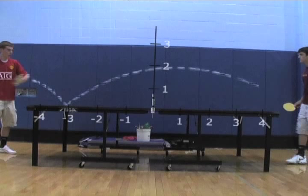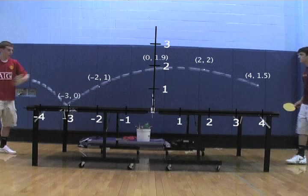Next thing, we'll bring up the graph and plot the points. The points are 4, 1.5, 2, 2, 0, 1.9, negative 2, 1, negative 3, 0 and negative 4, 1.2.